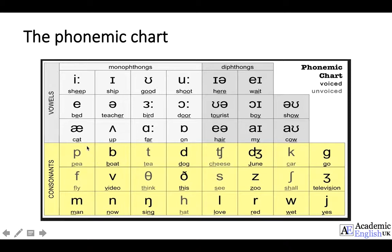I can do the same with the consonants. Here I have P and the sound is P. There are some unusual letters or symbols for some of these words, like CH for cheese and J for June. I suggest you pause this slide, go through these words and practice the sounds of the vowels and the consonants.